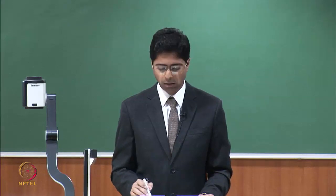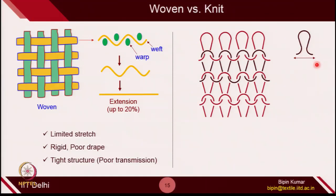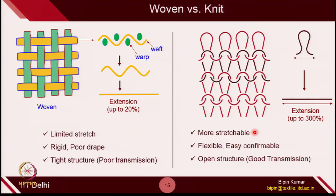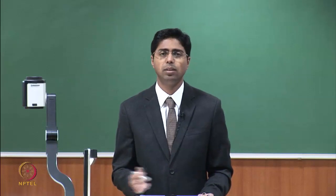While a knitted structure, as we have seen, is made up of loops which are very easy to deform. So when you try to apply any force, it will extend very easily because the loops will try to open up. Because of that, it is more stretchable and more flexible — it can conform to a 3D structure very easily. It is very, very open, that's why it gives you very good transmission properties. So these 2 structures are fundamentally different in many properties.